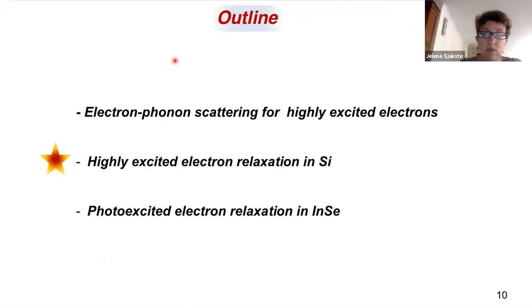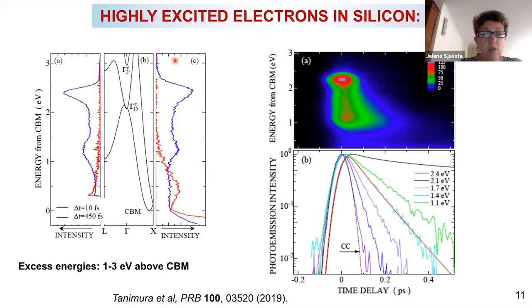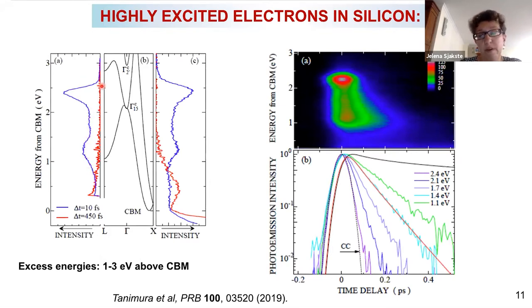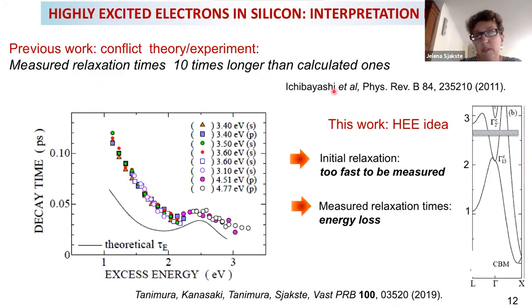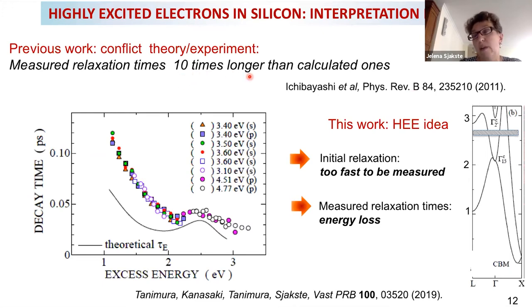Now I would like to present the new results, first about highly excited electron relaxation in silicon. In the case of silicon, the electrons were excited over a very large energy interval between 1 and 3 eV above the bottom of the conduction band. The reason why these experiments were performed is because there was a controversy related to previous work in 2011, when some of the relaxation times of hot electrons in silicon were measured by the same group. However, they were found to be about 10 times longer than the ones calculated by DFPT.